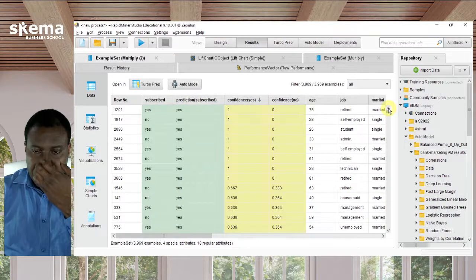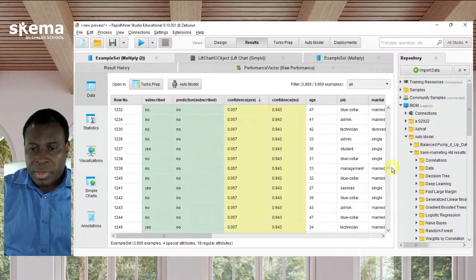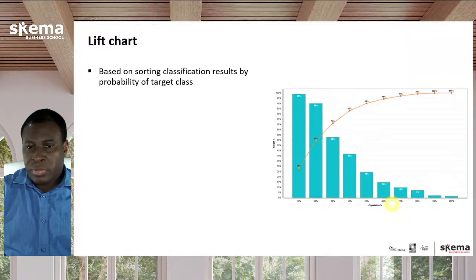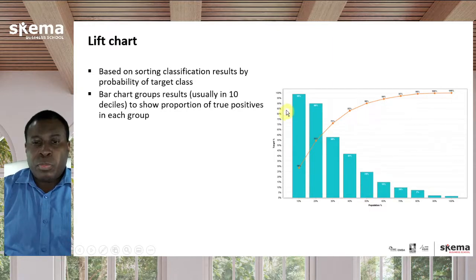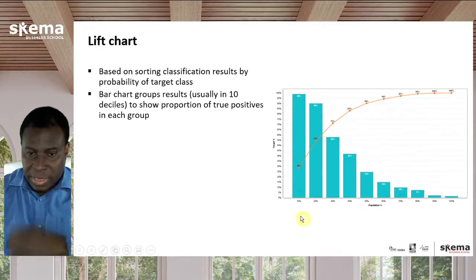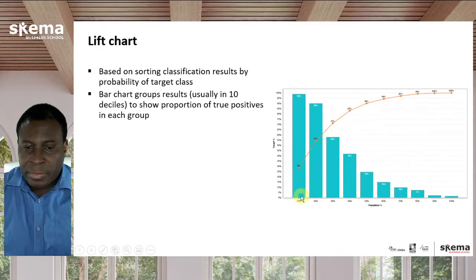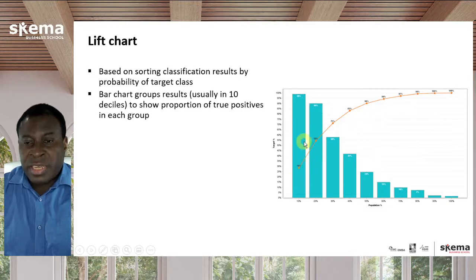To create a lift chart, the algorithm first sorts the data from top to bottom, then creates a bar chart which groups the results — usually into 10 deciles, though it could be a different number — based on the proportion of true positives. In this example, the first 10% of data had 99% true positives, covering 28% of all true positives in the entire dataset.